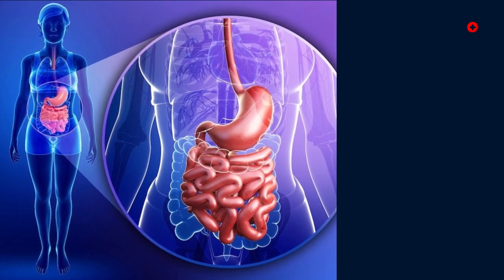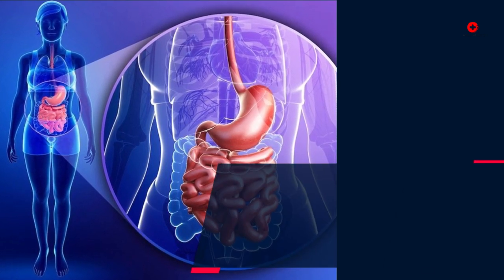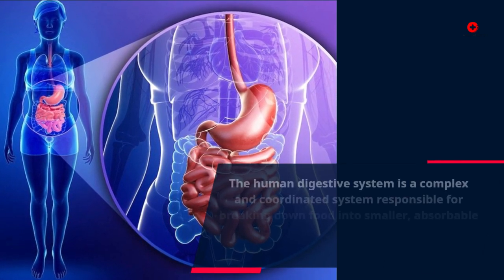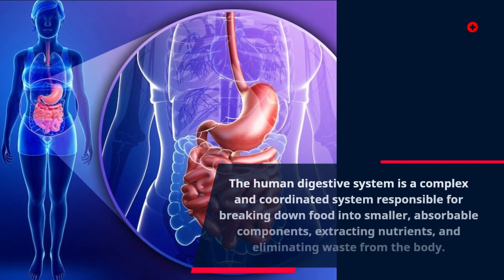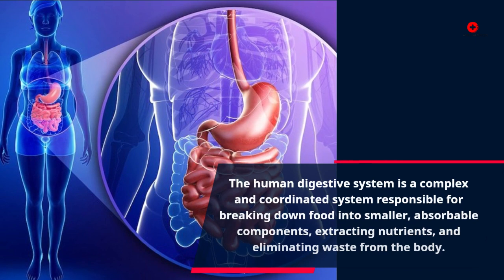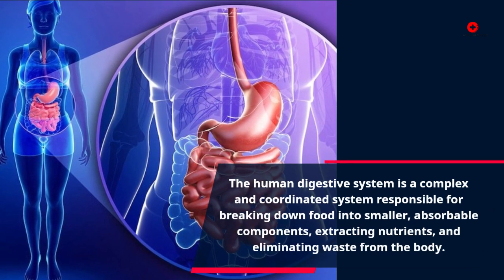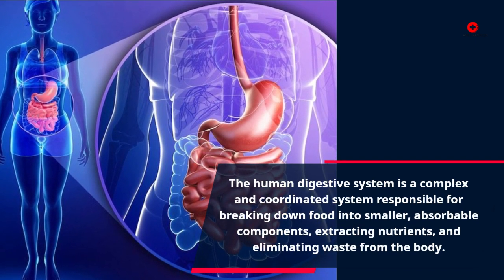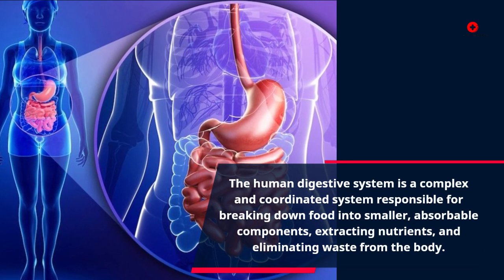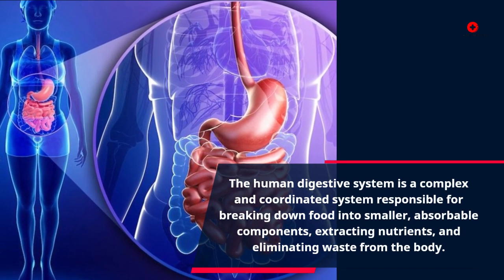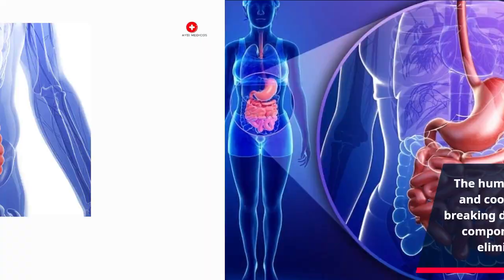The human digestive system is a complex and coordinated system responsible for breaking down food into smaller, absorbable components, extracting nutrients, and eliminating waste from the body.